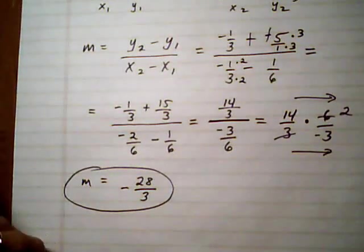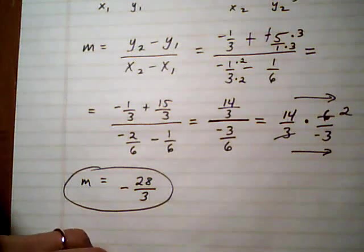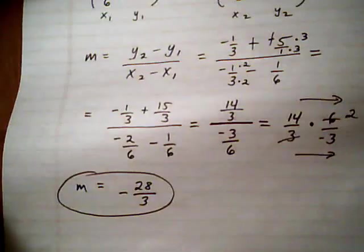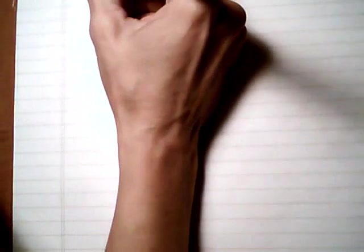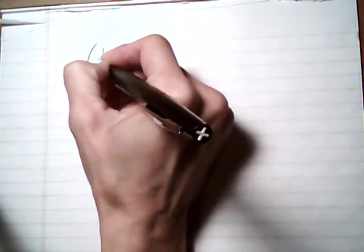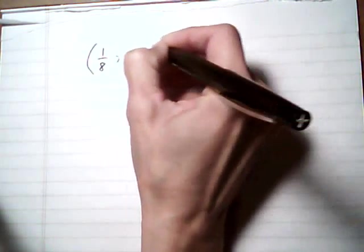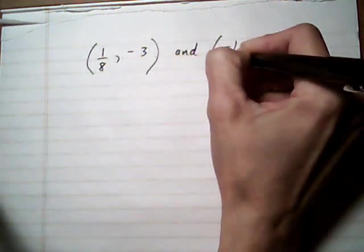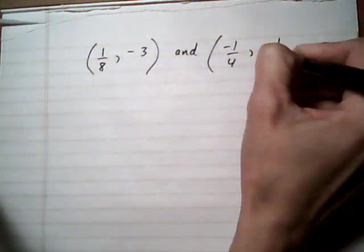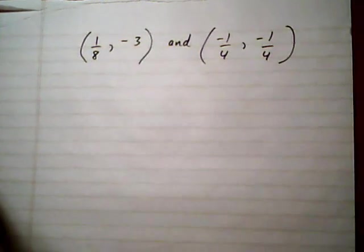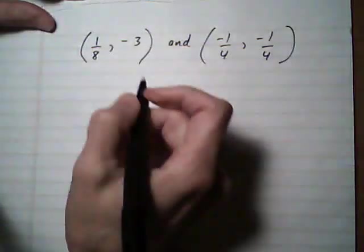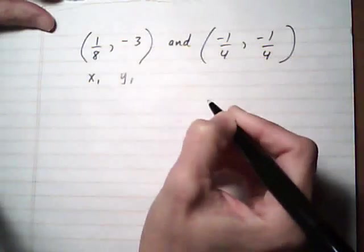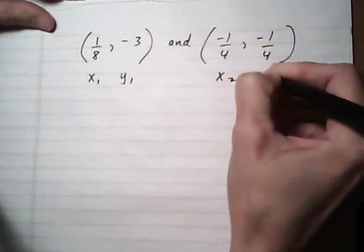Let's do one that's very similar but has different numbers just to get a little bit more practice. One over 8, minus 3, and minus 1 over 4, minus 1 over 4. So again, I'm just going to call this first one point 1. So it's x1 and y1. And the second one point 2, x2 and y2.